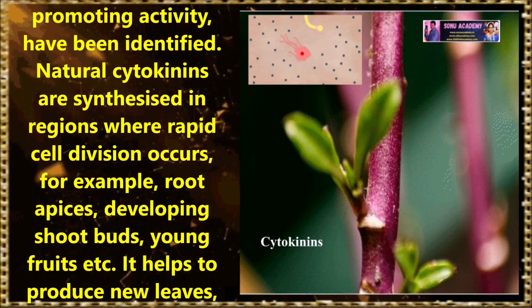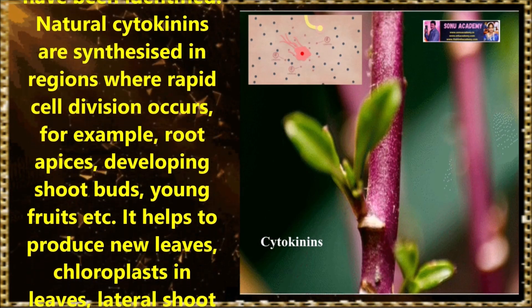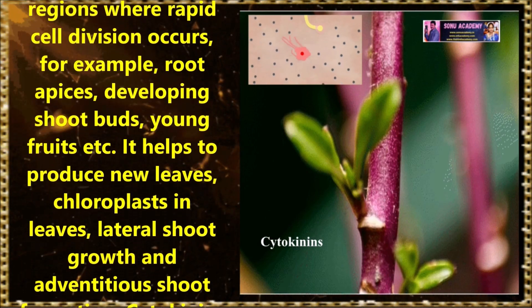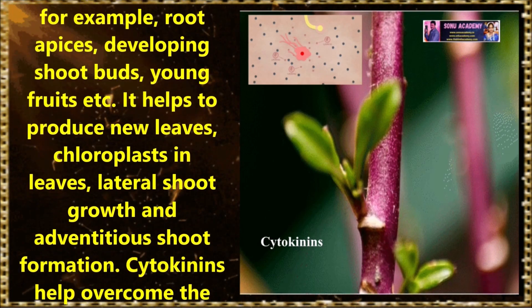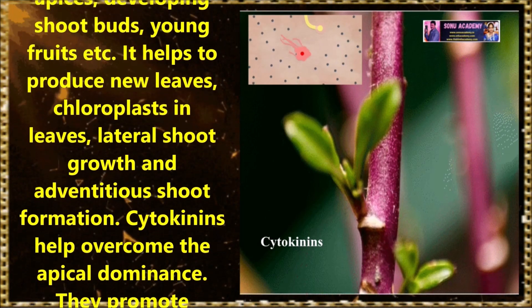Natural cytokinins are synthesized in regions where rapid cell division occurs, for example, root apices, developing shoot buds, young fruits, etc.